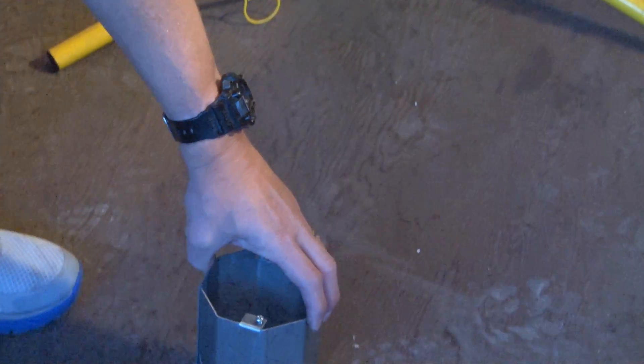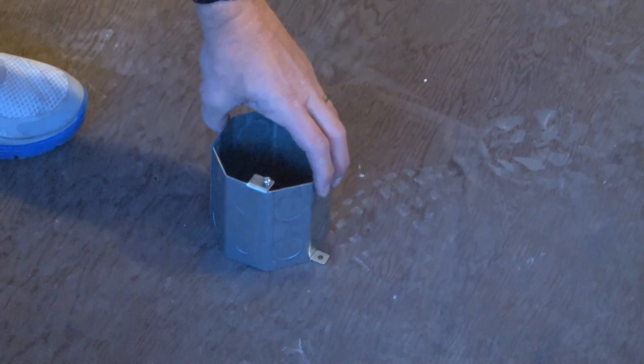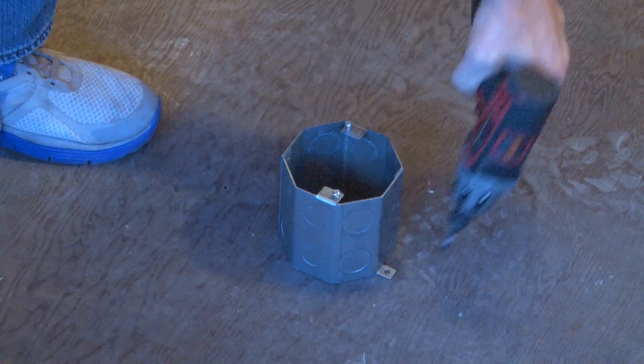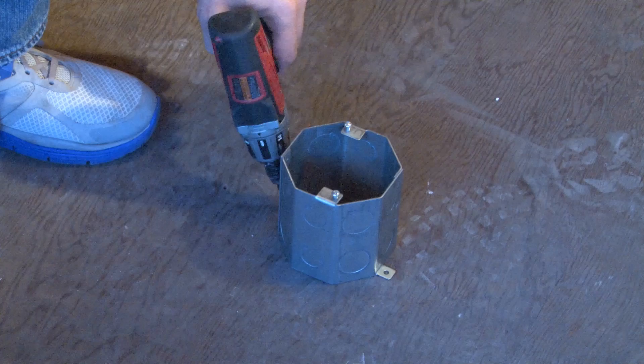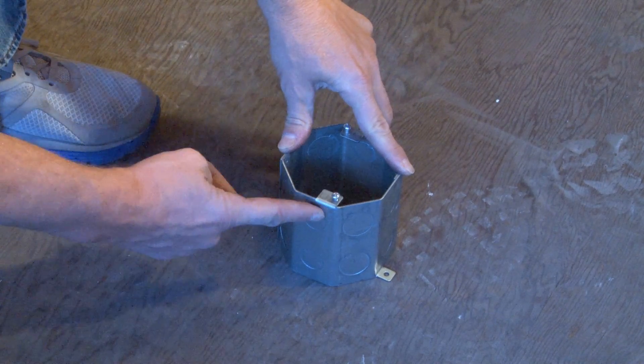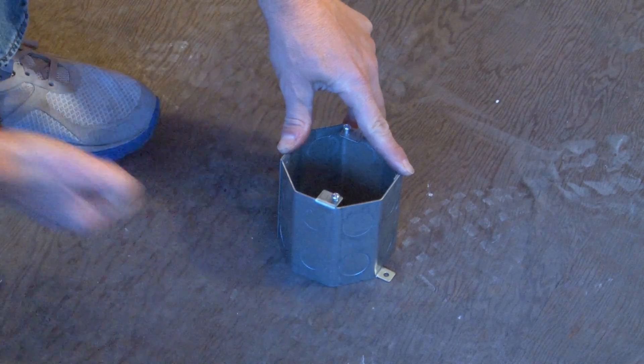The way it's installed is that the box is set directly on the form, and then a screw gun is used on the external feet to screw it directly to the wood form. Conduit knockouts can be removed and conduit installed.